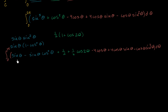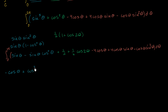Let's take the antiderivative of each term. The antiderivative of sine theta is negative cosine theta — because the derivative of cosine theta is negative sine theta, and the negatives cancel out. For the next term, we have the derivative of cosine theta, which is negative sine theta. So we make the substitution u = cosine theta. The antiderivative of that term is plus cosine cubed theta over 3.